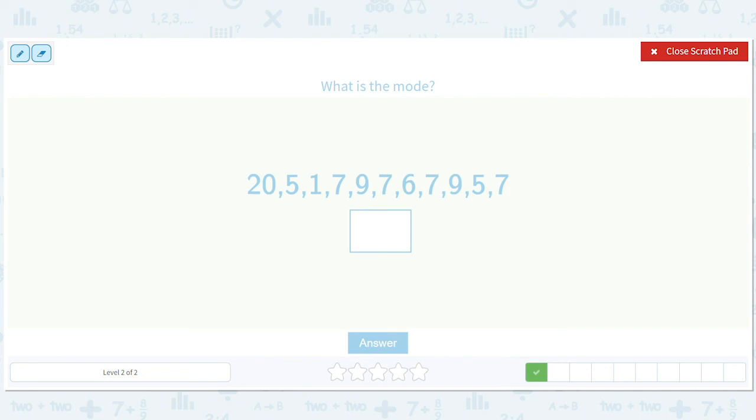So what's the mode here? We've got, let's see, I think it's seven, seven, seven, seven, seven. There are four sevens. I don't really see four of anything else. So we'll go with seven.